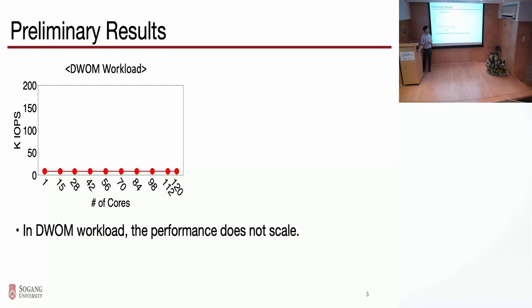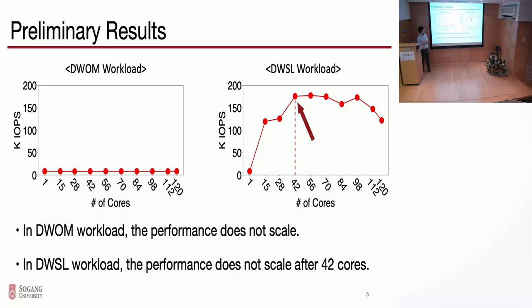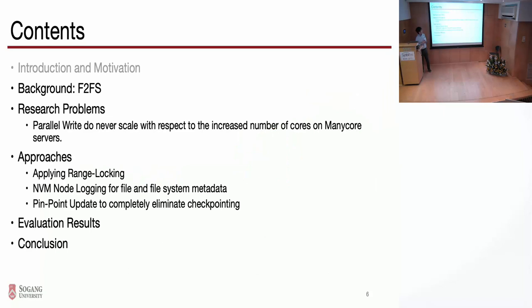For our preliminary results, we evaluated those two workloads using 120-core servers, increasing the number of cores running the workloads. As you can see in the graphs, we observed that the throughput does not scale in the DWM workload. And also in the DWSL workload, the throughput does not scale after 42 cores. Based on these preliminary results, we designed write optimization for parallel writes.